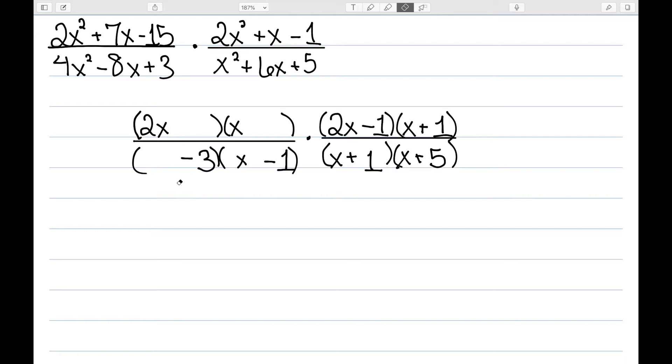Well, the other thing that multiplies to be 4 is 2 and 2, would that work? Now my outside terms give me negative 2, my inside gives me negative 6x, and negative 2 minus 6 is negative 8. So this one works out nicely.